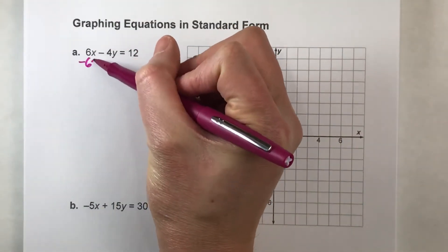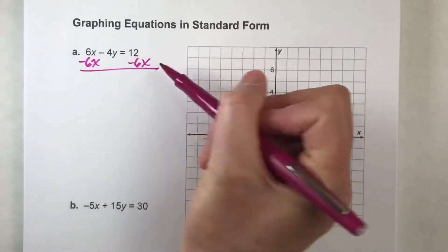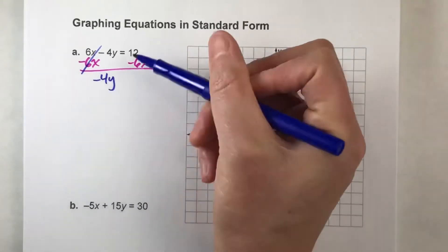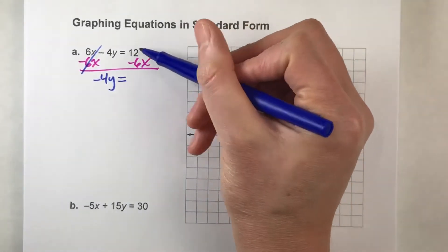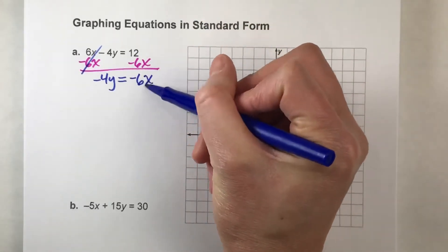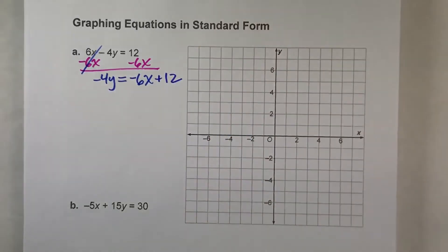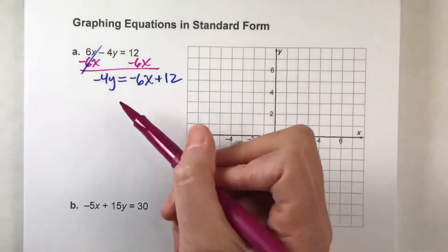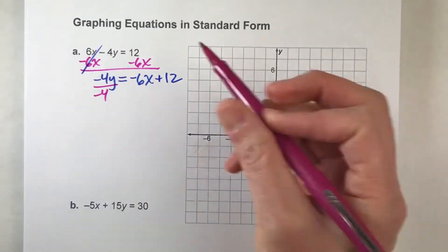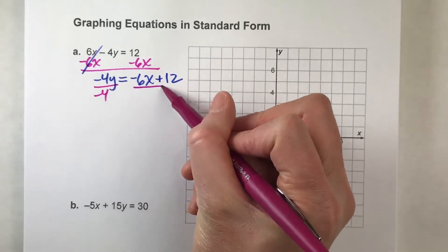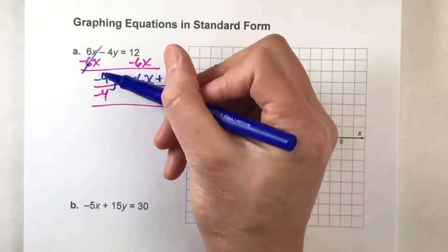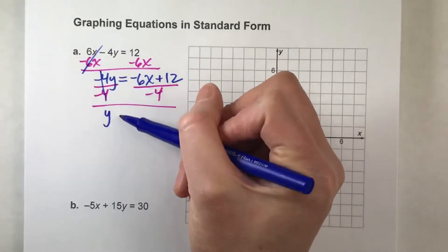So to get y by itself, I'm going to start by subtracting 6x on both sides. When I do that, the 6x's undo each other, but the minus 4y drops down, the equals drops down. And I can't subtract 6x from 12, so I'm going to keep these two separate — the negative 6x and then the positive 12 behind it. I've almost got y by itself, but it's being multiplied by negative 4, so I'm going to divide by negative 4. And what I do to one side, I have to do to the entire other side.